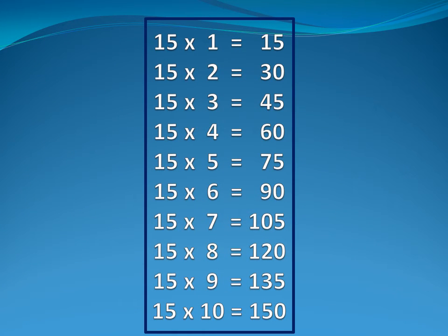Now fifteen table. Fifteen one is fifteen. Fifteen two is thirty. Fifteen three is forty-five. Fifteen four is sixty. Fifteen five is seventy-five.